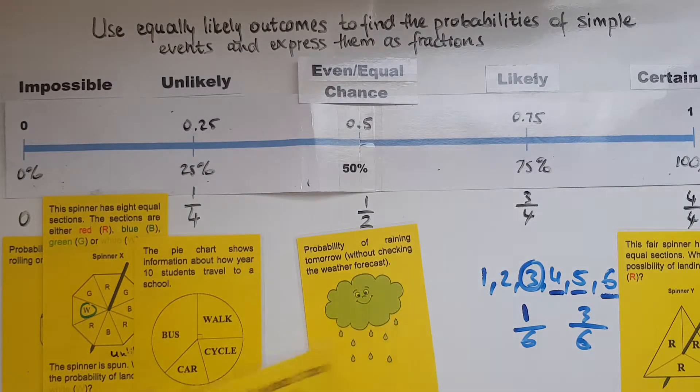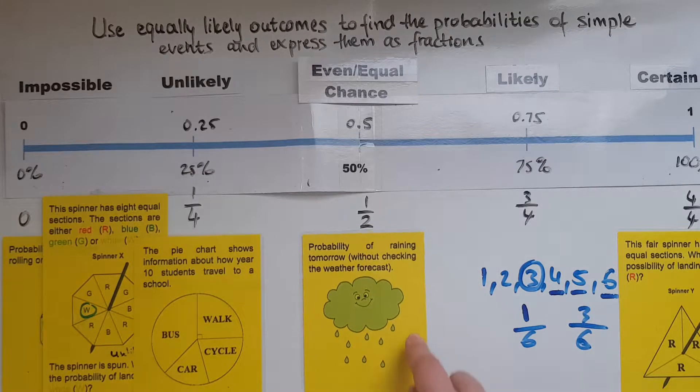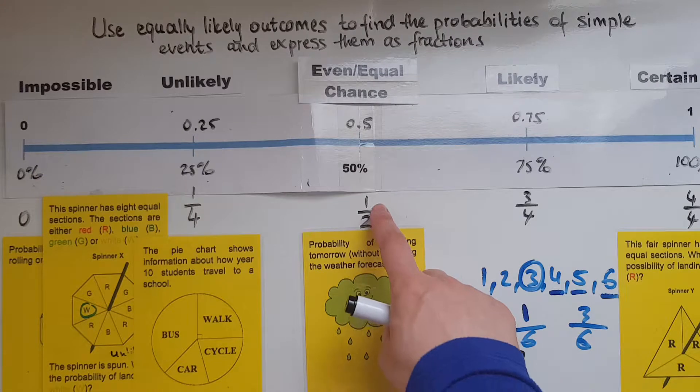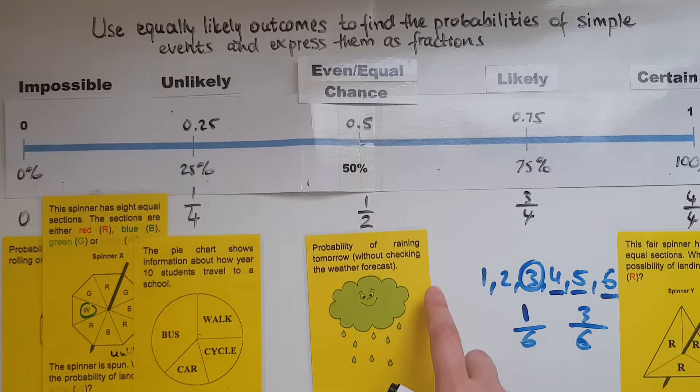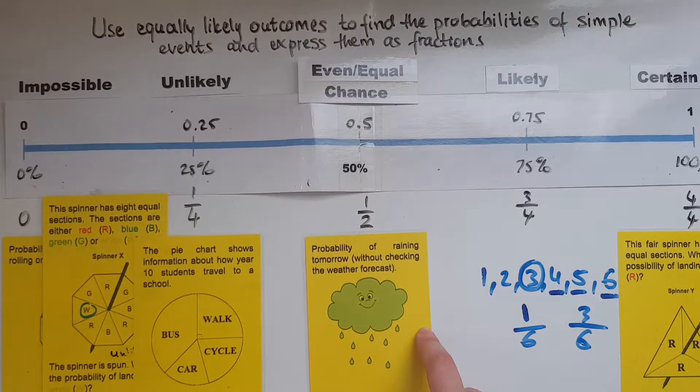And we looked at the probability of raining tomorrow without checking the weather forecast and we said that it could be raining or not raining which is one out of the two. So the probability of raining is one over two which is half.